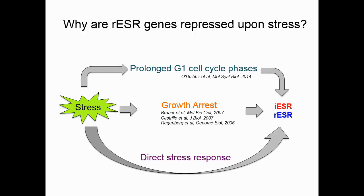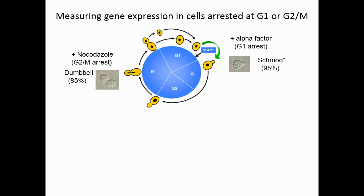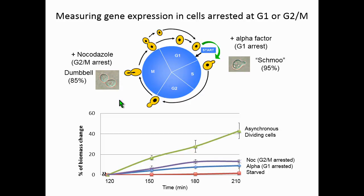In order to address those different models, the major challenge is that it is very hard to decouple growth arrest versus stress. The strategy we use is to arrest cells in different cell cycle phases. I treated cells with either alpha factor to arrest at G1 phase, or nocodazole to arrest at G2/M phases. After two hours of treatment, about 85–95% of cells are arrested at their desired phases — they are not really dividing, not really growing, and with a minimum of biomass accumulation.